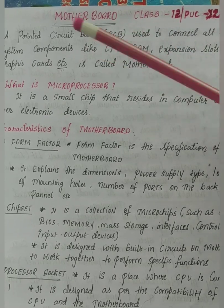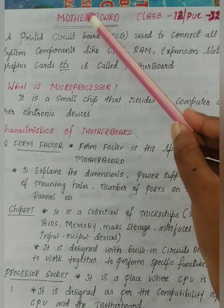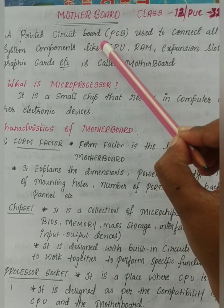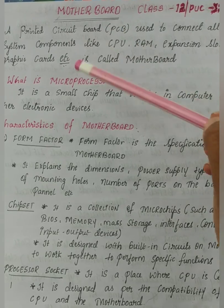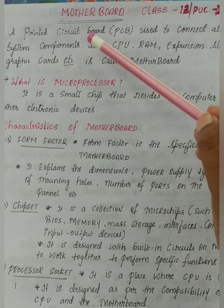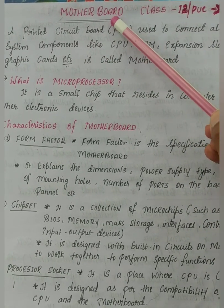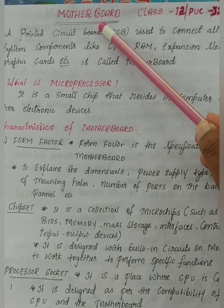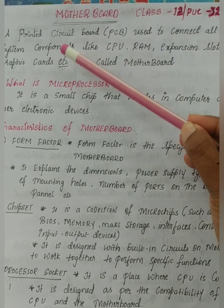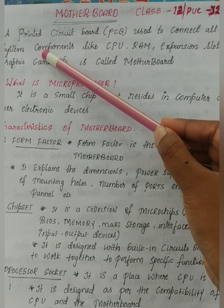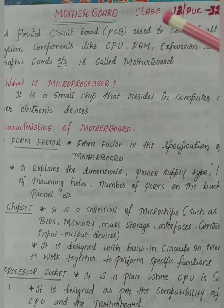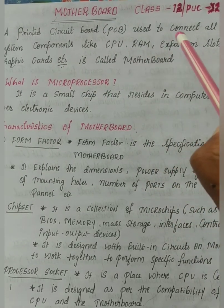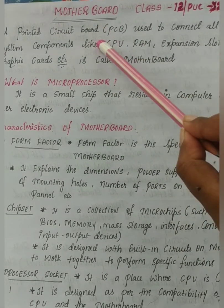The motherboard is a printed circuit board. Inside the motherboard, there are a lot of component symbols present — for example, USB, Bluetooth, and several other symbols are printed on the motherboard, which is why we call it a printed circuit board. It is used to connect all the components and perform some specific tasks.